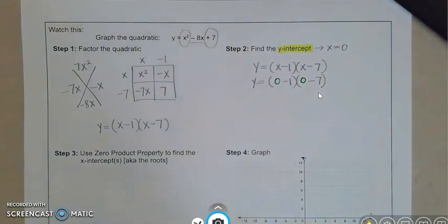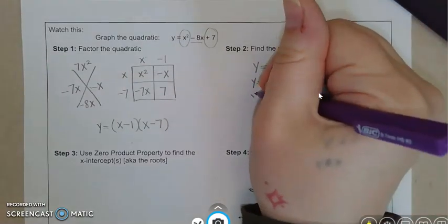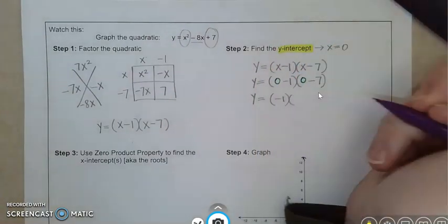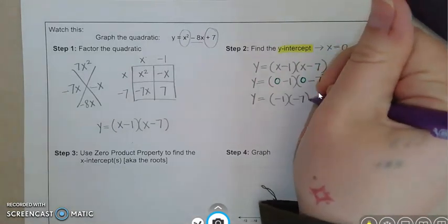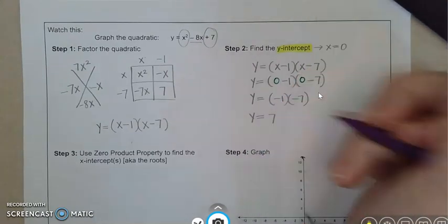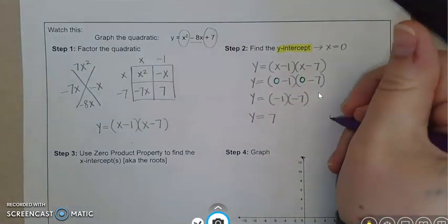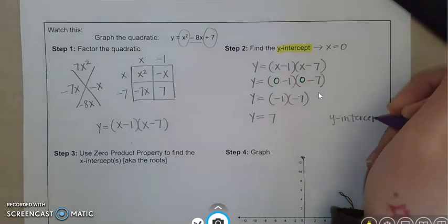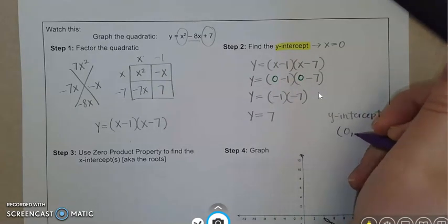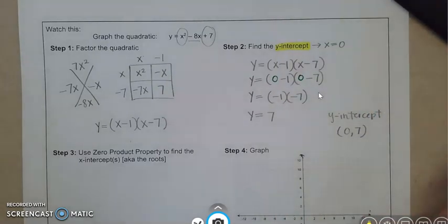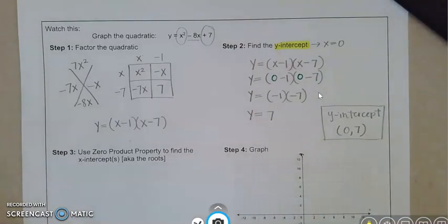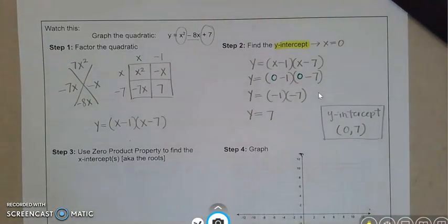Okay, so we plugged our zero in. Let's do some simplifying. We've got zero minus one which is negative one. Zero minus seven which is negative seven. And last step, negative one times negative seven is positive seven. So our y-intercept, and we're going to write this as a coordinate, x zero, y is seven. And I'm going to put a box around it because we will plot that eventually.